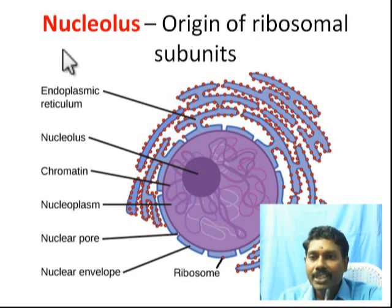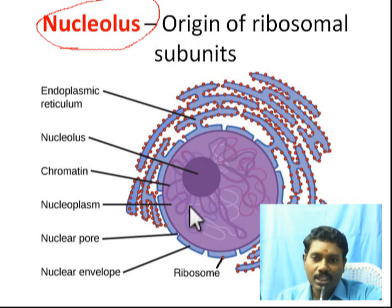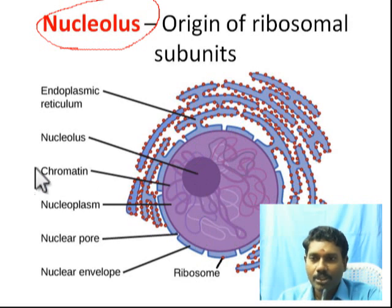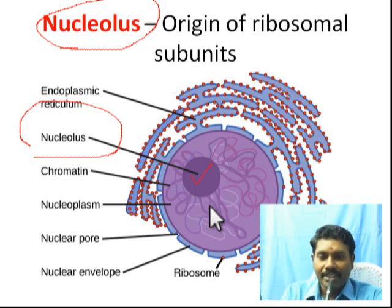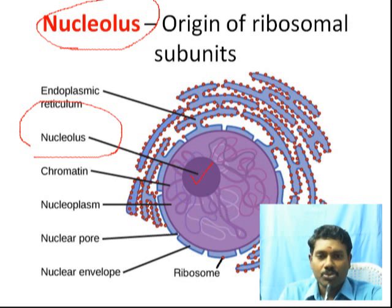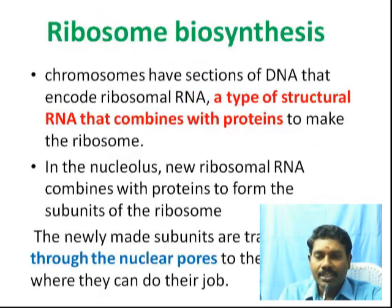Ribosome production happens in the nucleus. If you look at the nucleus of the cell, you can see the round dense portion called the nucleolus. This ribosome is produced in the nucleolus. Because what is ribosome? RNA as well as protein — these two make up ribosomes. RNA is produced from chromosomes which are present in the nucleolus.